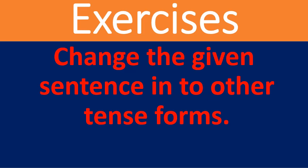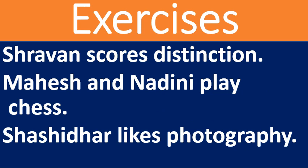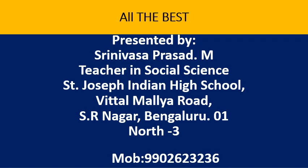Dear students, now I am giving you exercises. I give you three sentences and you need to change them into other tense forms — present continuous, present perfect, simple past, past continuous, past perfect, simple future, future continuous, future perfect. The sentences are: 'Shravan scores distinction.' 'Mahesh and Nandini play chess.' 'Shashidhar likes photography.' I hope you have understood this well. Keep watching SPSUZ online learning classes. If you have not subscribed, press the subscribe button and the bell icon — you will get a notification whenever I upload social and English modules. I wish you all the best. Thank you, dear teachers and dear students.